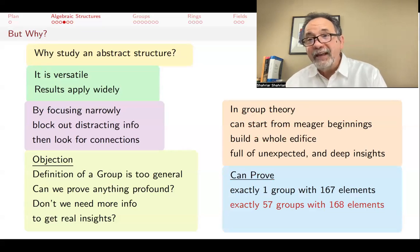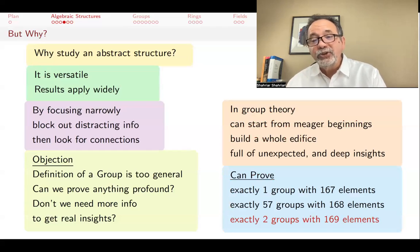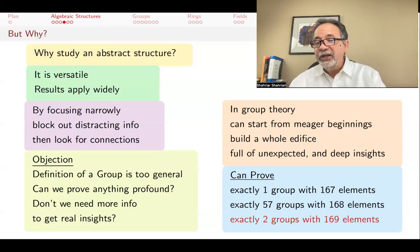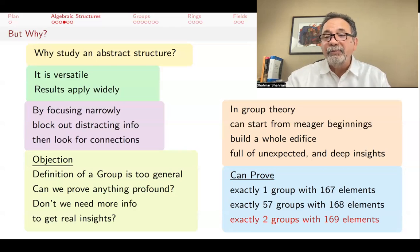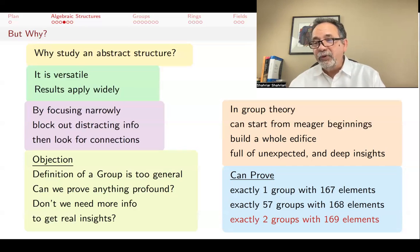For example, we can prove that there's actually only one group with 167 elements. But there are, on the other hand, 57 groups with 168 elements and two groups, exactly two groups, with 169 elements. In these lectures, you will see a proof why there's only one group of order 167 and two groups with 169 elements. You'll also be able to construct many groups with 168 elements, although the exact count will be beyond what we'll cover in this introductory course.